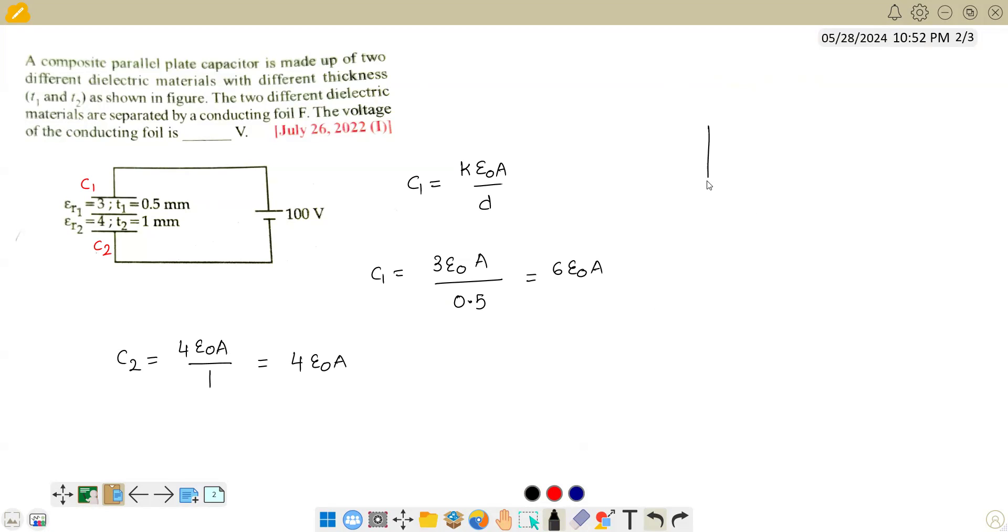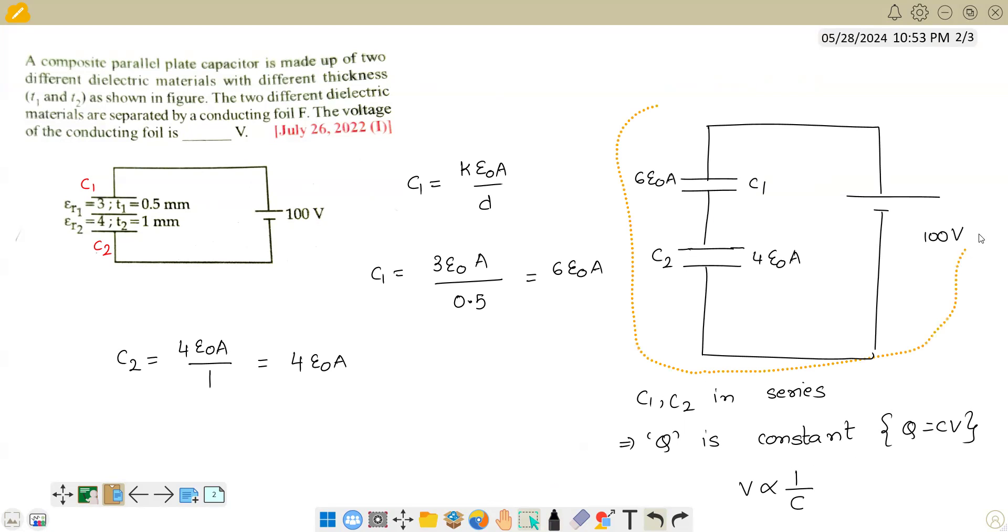So, I can redraw this entire situation as we have something of 6 epsilon naught A and C1, and we have something of 4 epsilon naught A and C2, and it is now connected to a 100 volt battery. And we know when two capacitances are in series, charge would be constant. C1, C2 in series. What does it imply? It implies that Q is constant. Since Q equals C V, voltage would be inversely proportional to capacitance. So, using that logic, let us try to solve this.